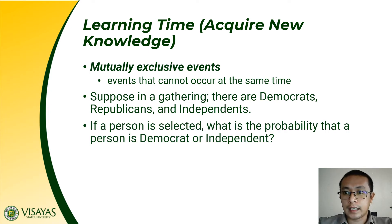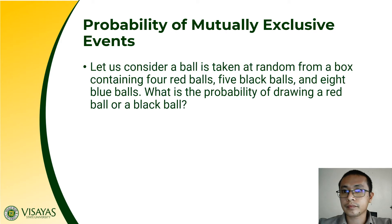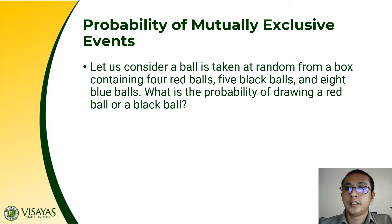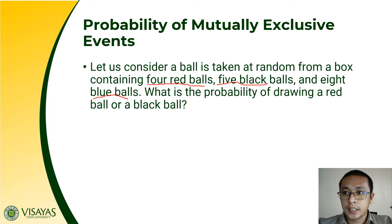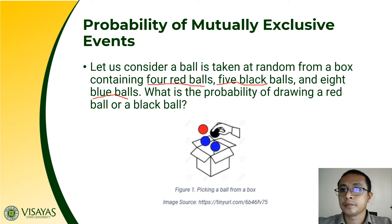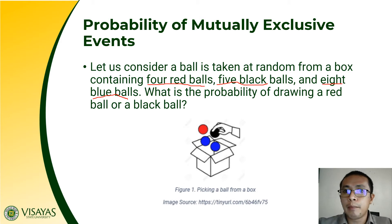So if a person is elected, what is the probability that the person is Democrat or Independent? To give you an idea of what mutually exclusive events are, let us consider a ball taken at random from a box containing four red balls, five black balls, and eight blue balls. What is the probability of drawing a red or a black ball? So in this illustration, we have four red balls, five black balls, and eight blue balls.